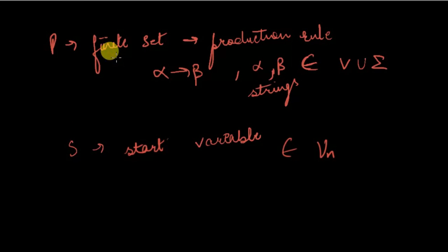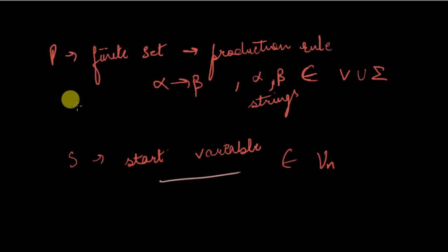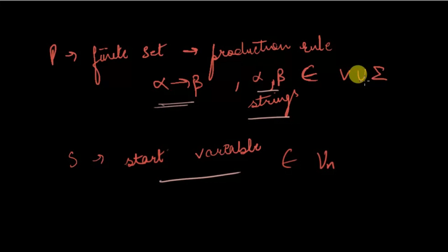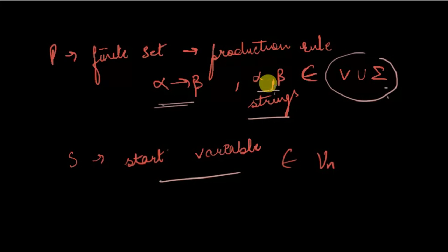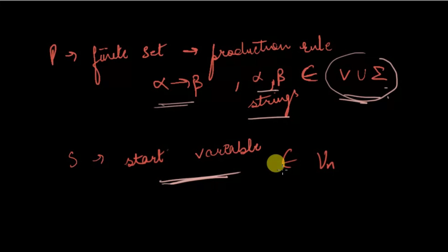P is the finite set called the production rule, also known simply as production. It is of the form alpha to beta, where alpha and beta are strings belonging to the union of the sets VN and sigma, which are disjoint sets. S is the start variable — it is the starting symbol from which we begin our process in the machine, and it belongs to VN.